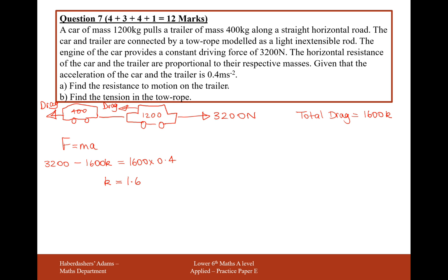And then answering this question, find the resistance to motion on the trailer. In this case, the drag on the trailer, just the trailer, not the whole system, is going to be 400 times 1.6. And we're going to get 640 newtons. So that's the answer to part A.